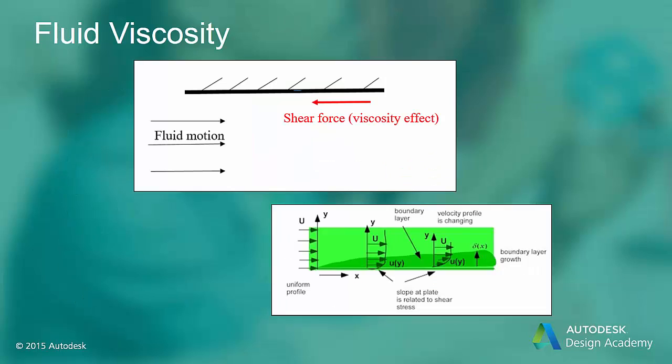One fundamental property of fluid motion is the material property viscosity. Fluid viscosity creates friction between the fluid motion and the solid walls containing the fluid. This friction, called shear force, opposes the fluid motion.